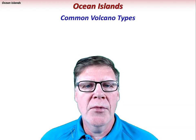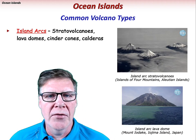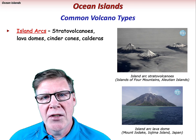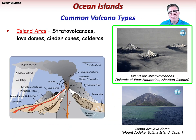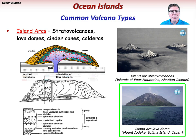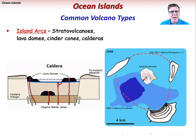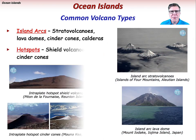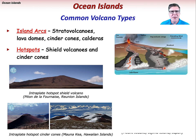Several volcano types are common to ocean islands. Island arcs are built mostly on towering stratovolcanoes, with lava domes and calderas also noteworthy. Stratovolcanoes form the Islands of the Four Mountains in the Aleutian Islands. Mount Ayodaki is a lava dome on Ayojima Island in Japan. And Krakatoa, located between Sumatra and Java, is a famous caldera that erupted in 1883. Hotspots typically generate mafic volcanic structures like shield volcanoes and cinder cones.